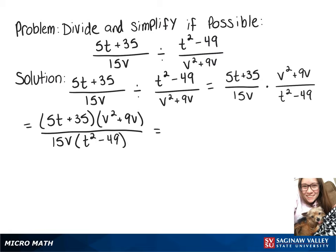In that first set of parentheses on top, we can factor out a 5, which leaves t plus 7. And in that second set of parentheses, we can factor out v, which I'll bring out front, and that'll leave v plus 9.